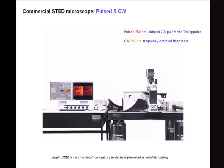You can easily add STED to any standard confocal microscope. This is a standard confocal microscope, and what is added here is a second beam of light that is shaped into a donut by applying a helical phase ramp, and then you just scan the beams — jointly the excitation beam and the STED beam — and you get the higher spatial resolution.